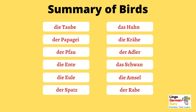Die Taube. Der Papagei. Der Pfau. Die Ente. Die Eule. Der Spatz. Das Huhn. Die Krähe. Der Adler. Das Schwan. Die Amsel. Der Rabe.